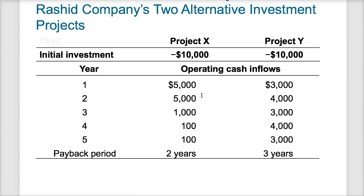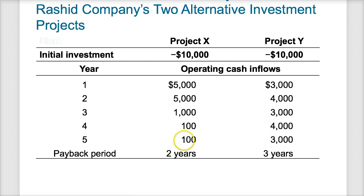Looking at two other projects, X and Y: Project X pays itself back in two years, Project Y in three years, so the payback period would favor Project X. However, with Project Y, years four and five have much more significant cash flows. Over five years, Project Y returns $17,000 total versus only $11,200 for Project X. So even though the payback period says Project X is better, Project Y actually returns more over the longer period — illustrating how the payback period, if you're just counting years and not looking at specific cash flows, can lead you down the wrong path.